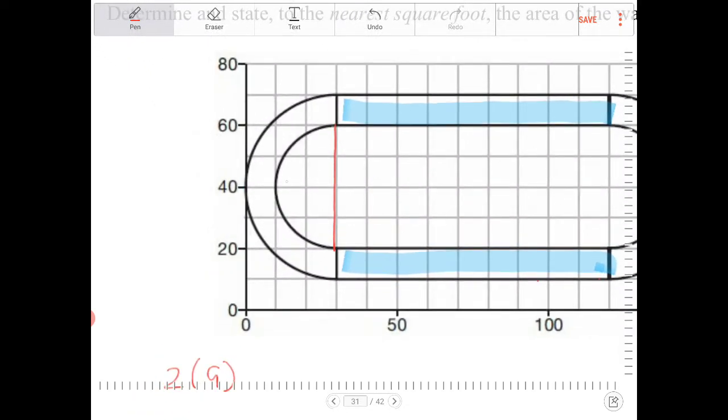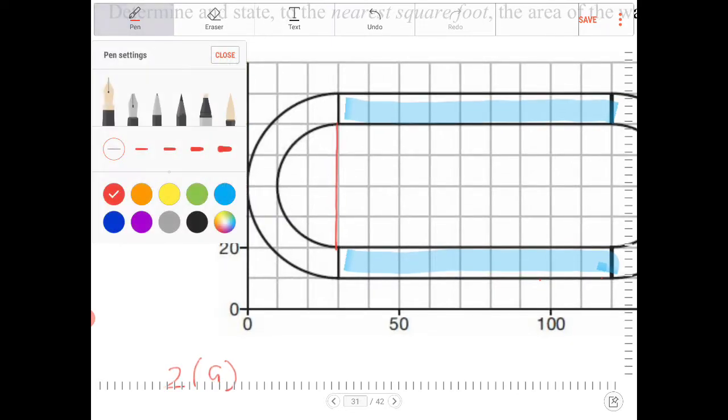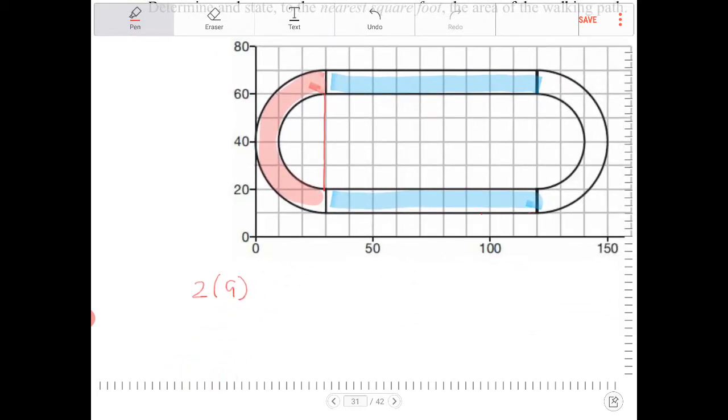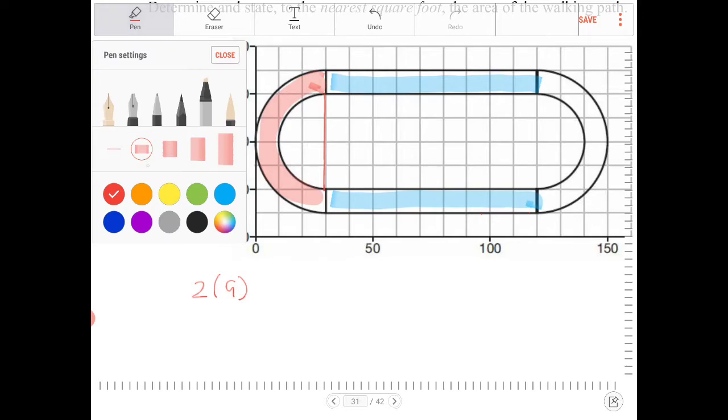And then we are going to subtract out these semicircles. Now, in order for us to do this, we are going to have to subtract the big semicircle by the little semicircle.